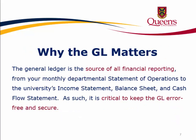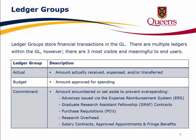Why the GL matters. The General Ledger is the source of all financial reporting, from your monthly departmental statement of operations to the university's income statement, balance sheet, and cash flow statement. As such, it is critical to keep the GL error-free and secure. Ledger groups store financial transactions in the GL. There are multiple ledgers within the GL; however, three are most visible and meaningful to end users: actual, budget, and commitment.